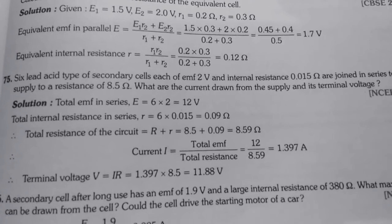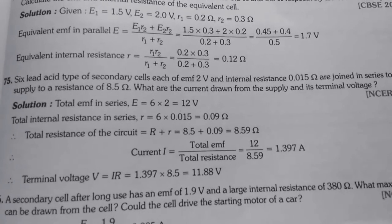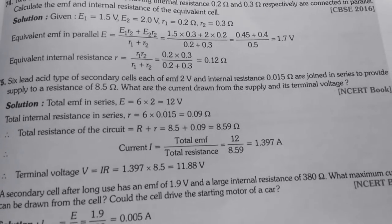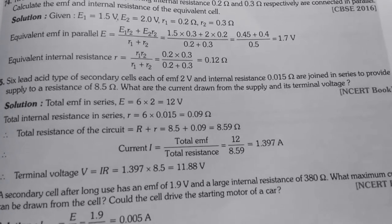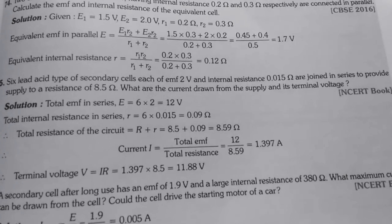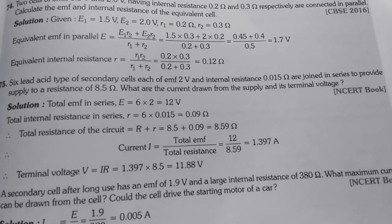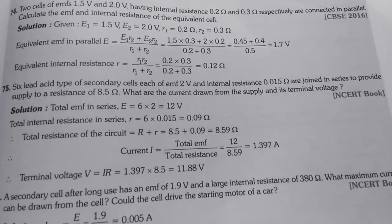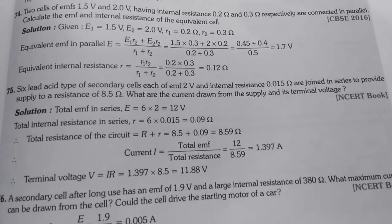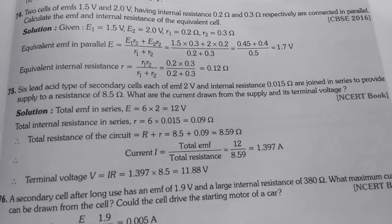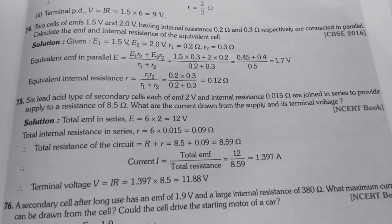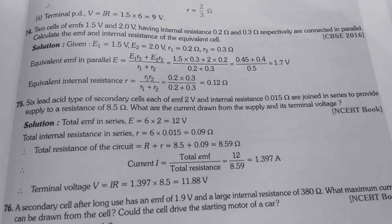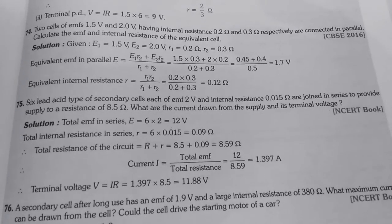Now, next move to next question. 75. 6 lead acid type of secondary cells, each of EMF 2 volt and internal resistance 0.015 ohm, are joined in series to provide supply to a resistance of 8.5 ohm. What are the current drawn from the supply and its terminal voltage? So, total EMF in series, the cells are connected in series. So, total EMF is E equals to 6 into 2 that is 12 volt. And total internal resistance 6 into 0.015 that is 0.09 ohm.